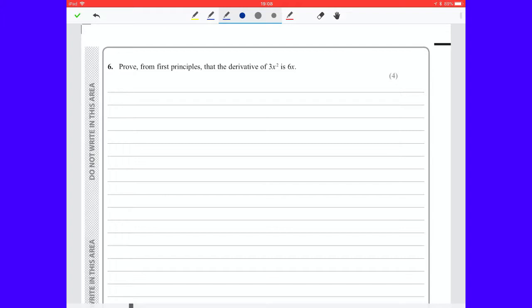Question 6. Prove from first principles that the derivative of 3x squared is 6x. Now this is a standard procedure we're going to work through. We begin by saying let f(x) equal 3x squared.